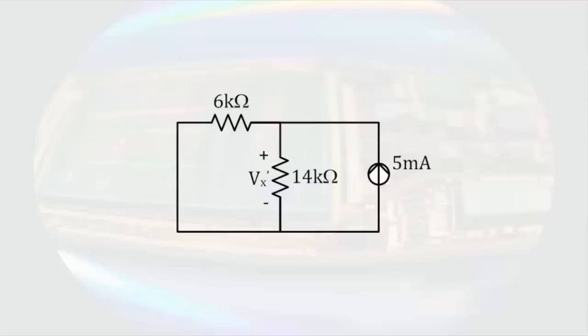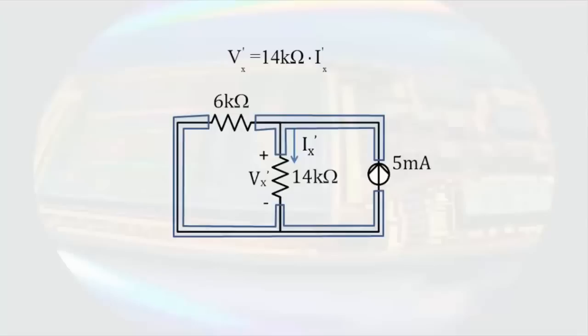Also, since I am not analyzing the whole circuit right now, I am going to put a prime on all the variables just to keep them straight. If I want to know the voltage Vx prime, it will be very easy to determine if we know the current through the 14-kiloohm resistor. We can then use Ohm's law. Just so we are sure we are looking at the circuit correctly, let's identify the nodes. Since there are only two nodes in the circuit, everything is in parallel. The current through the 14-kiloohm resistor is easily determined using current division. This results in a current of Ix prime equals 1.5 milliamps, which results in Vx prime being equal to 21 volts.